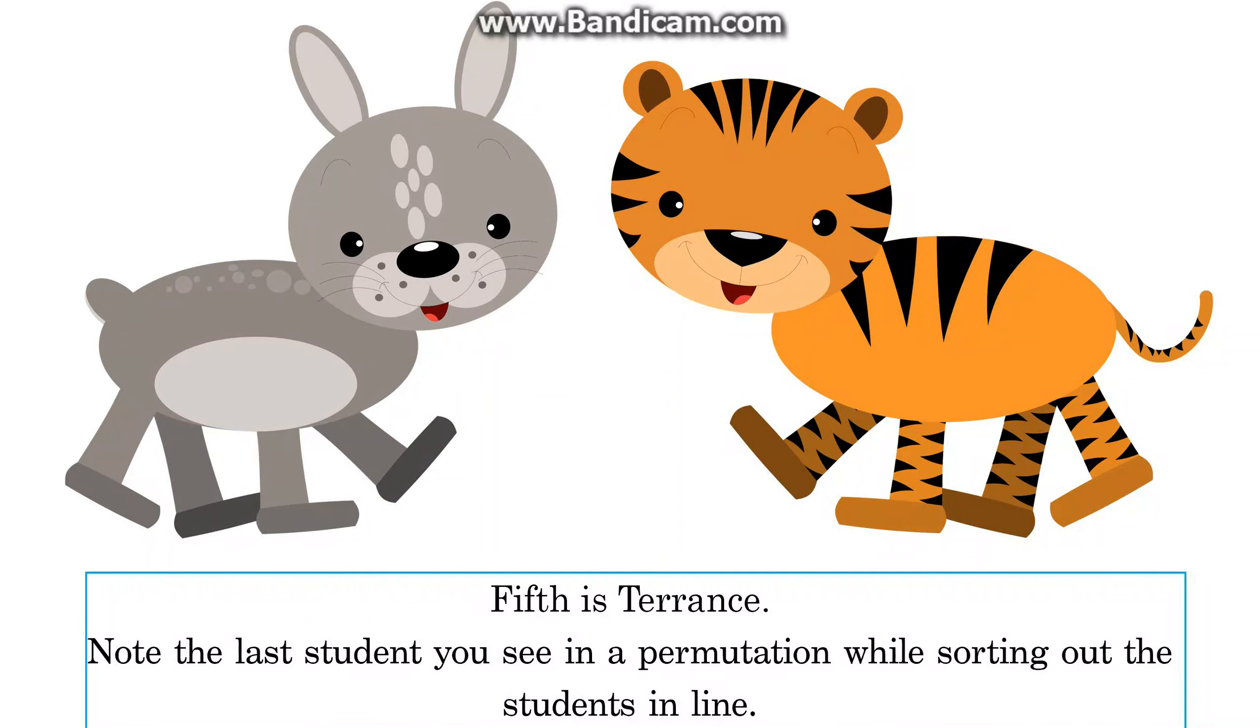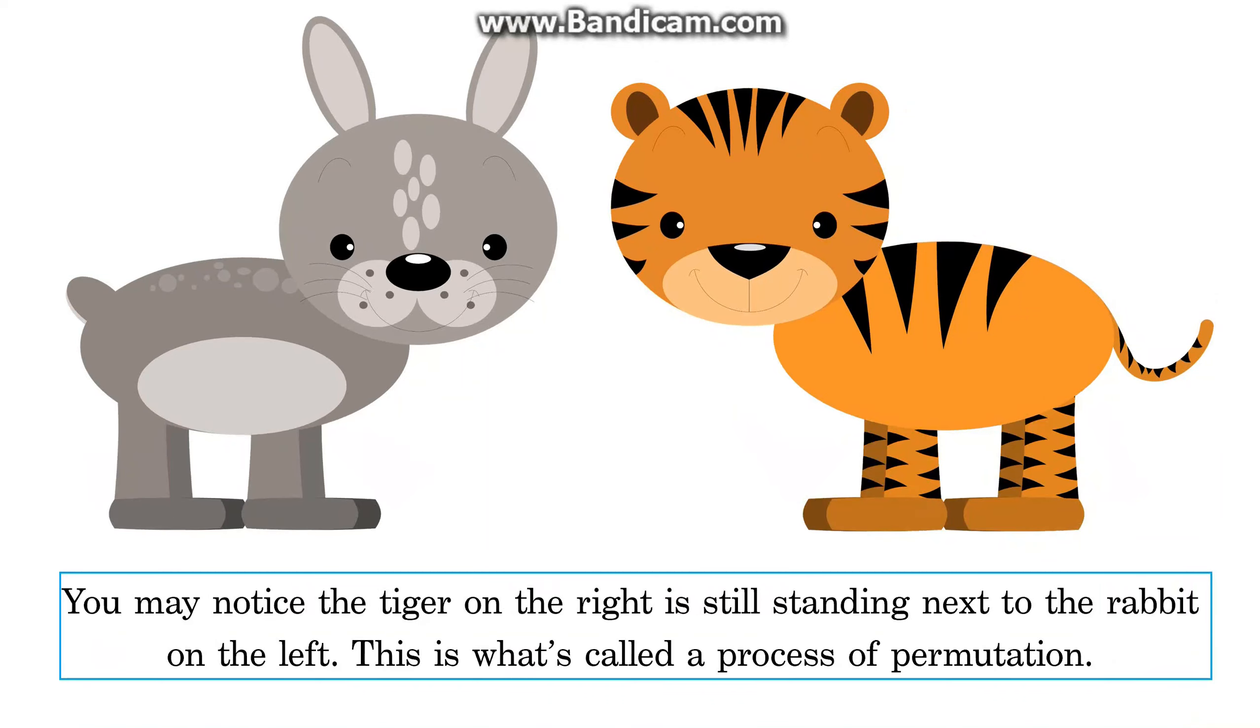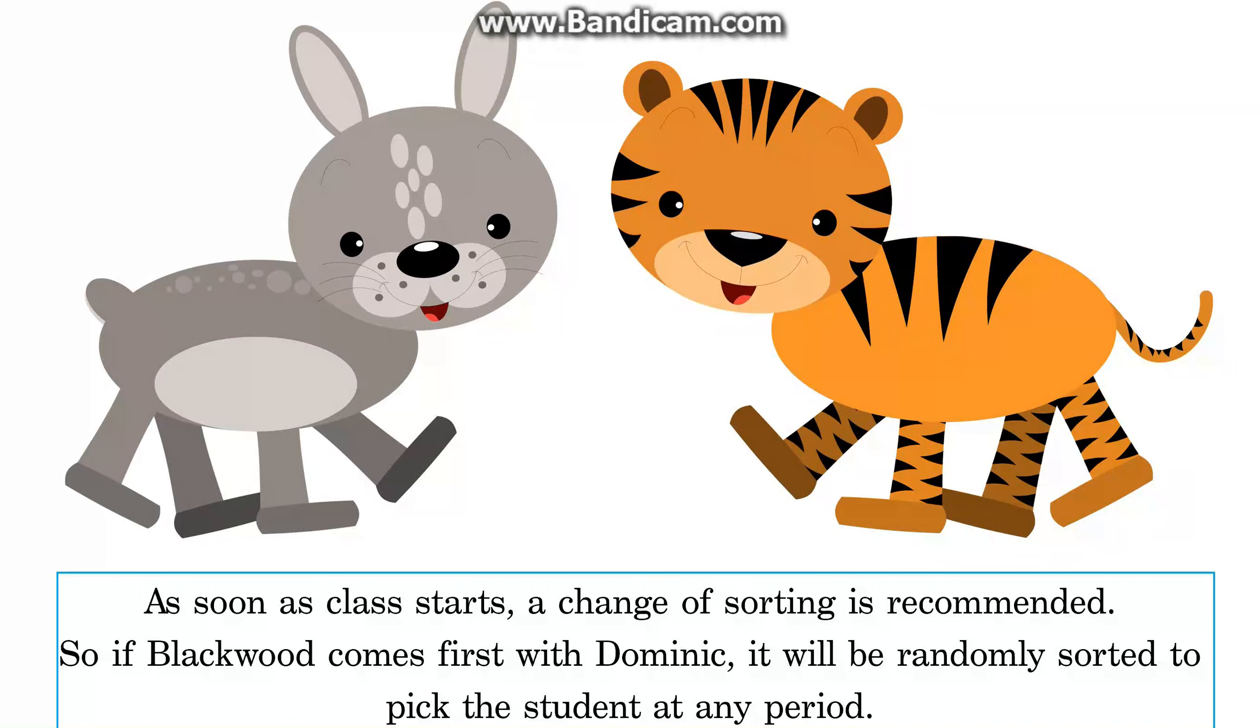Note the last student you see in a permutation while sorting out the students in line. You may notice the tiger on the right is still standing next to the rabbit on the left. This is what's called a process of permutation. As soon as class starts, a change of sorting is recommended.